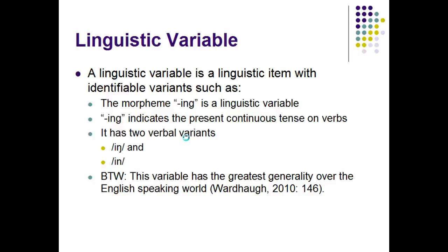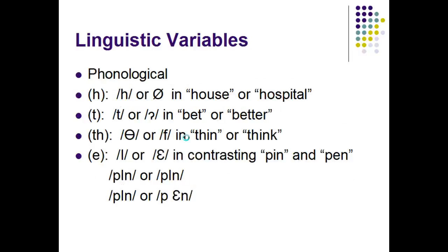More examples of linguistic variables are phonological. For example, you can have the h or no-h sound — some people say 'house,' others may say 'ouse' or 'ospital.' There is the T or the glottal stop in 'bet' or 'better,' or people can also say 'be'er.' The th or f in 'think' or 'fink,' and the contrasting vowels of ih or eh in 'pin' and 'pen' — some people say them exactly the same and some distinguish between the vowels.